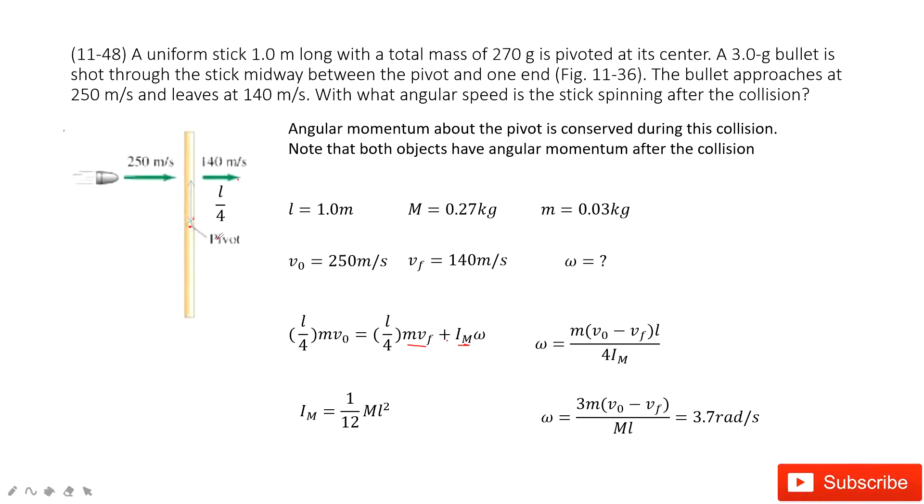v₀ and vf are given. So you get the moment of inertia of the stick, moment of inertia at the center of mass is 1 over 12 ML². Now we input, we do the calculation for this one.